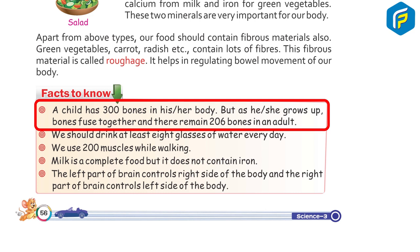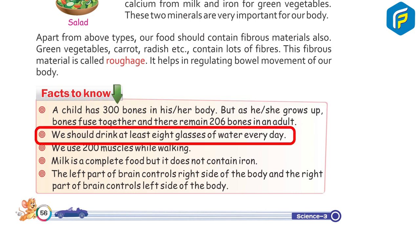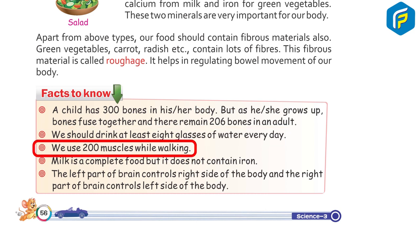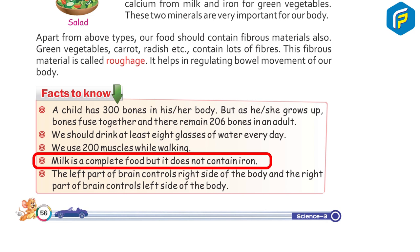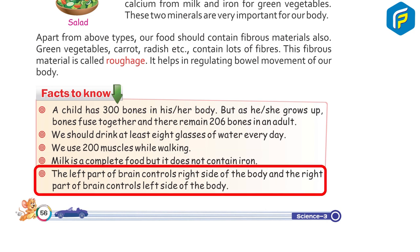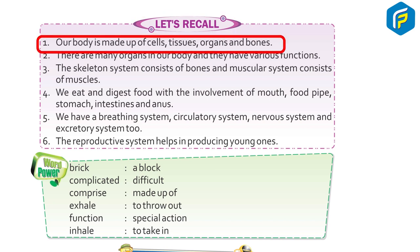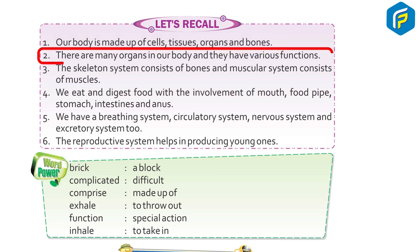Facts to know: A child has 300 bones, but as they grow up bones fuse together, leaving 206 bones in an adult. We should drink at least eight glasses of water every day. We use 200 muscles while walking. Milk is a complete food but does not contain iron. The left part of the brain controls the right side of the body, and the right part controls the left side.